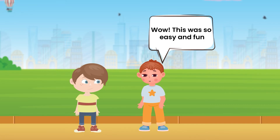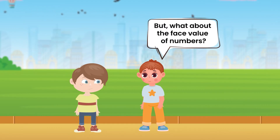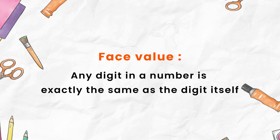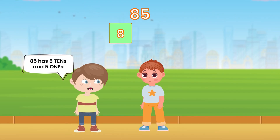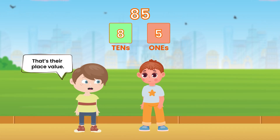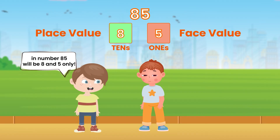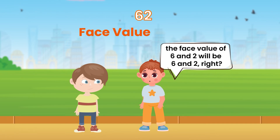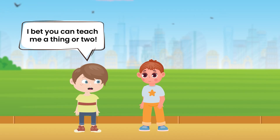Wow, this was so easy and fun! Yes, similarly for 200 you fly twice. But what about the face value of numbers? The face value of any digit in a number is exactly the same as the digit itself. Let's take any number, say 85. Now 85 has eight tens and five ones — that's their place value. But the face value of 8 and 5 in the number 85 will simply be 8 and 5. That's even easier! So for any number like 62, the face value of 6 and 2 will be 6 and 2, right? Exactly, Peter — you learn so fast!